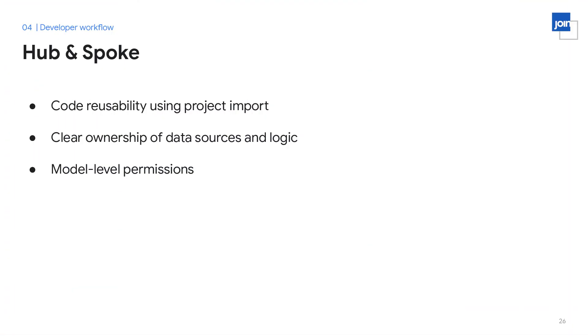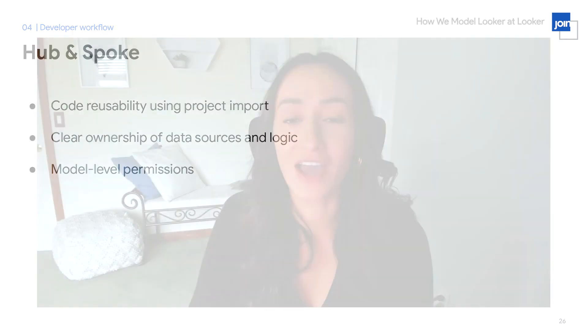To summarize, the hub and spoke project architecture allows our team to reuse code efficiently. We're able to empower other users to collaborate on our models, view files, and projects through our ambassador program. We're also able to specify the appropriate permissions for each project so that users only see information that is relevant to them. If you have any questions or would like to further discuss the hub and spoke project architecture, you can find me on LinkedIn as Paola Renteria. Thank you for joining me today.